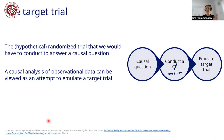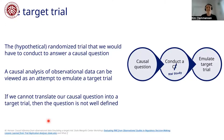Once we have defined what our hypothetical randomized trial looks like, we can see the causal analysis of observational data as an attempt to actually emulate the target trial in our observational dataset. This really puts the causal question up front. And if we are not actually able to translate our causal question into a target trial, then we have to go back, because our question is simply not well defined yet.